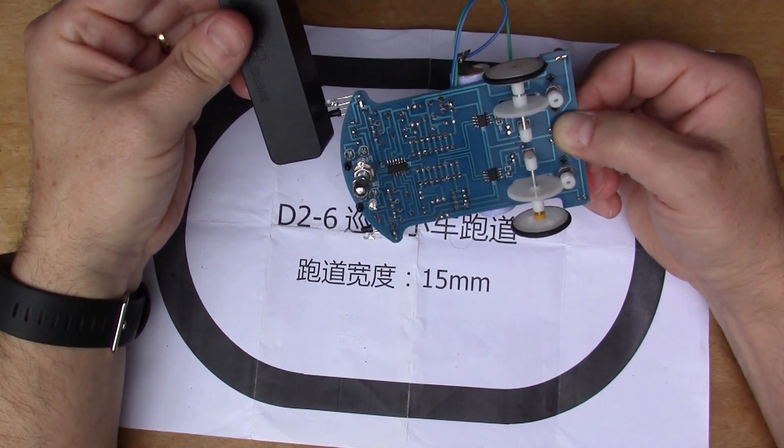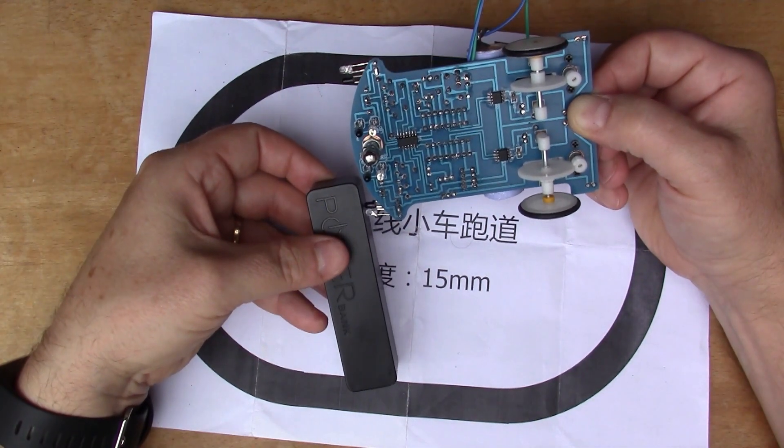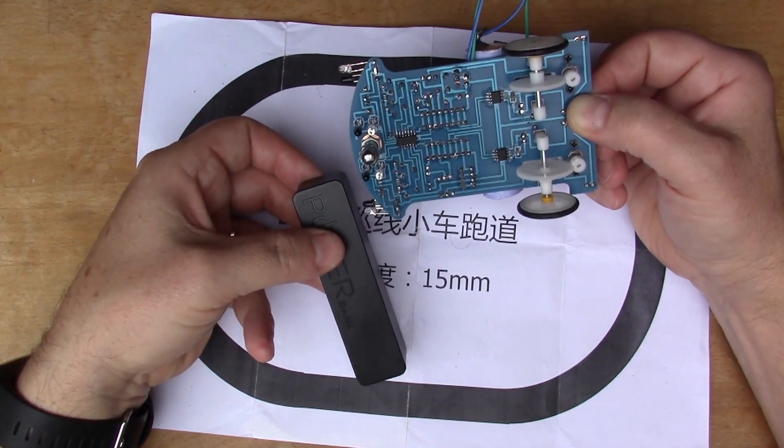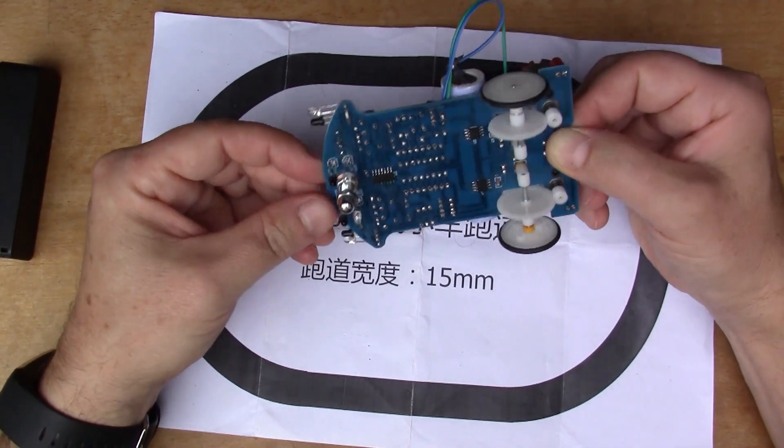There we go, so one wheel starts going back in the other direction now. And likewise if I block this one, one of the wheels starts reversing, so it has the ability to turn away from things in the way.